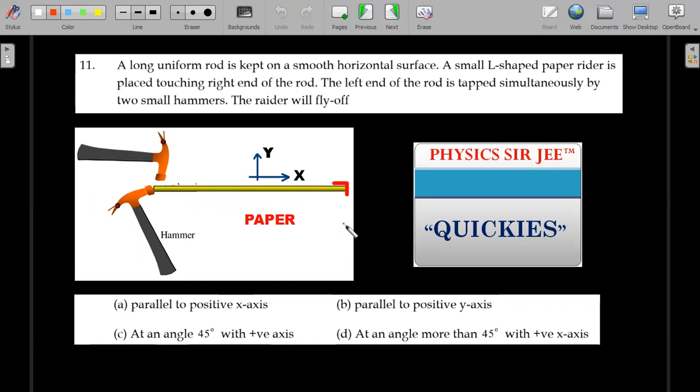A long uniform rod is kept on a smooth horizontal surface. A small L-shaped paper rider is placed touching right end of the rod. The left end of the rod is tapped simultaneously by two small hammers. One is making it vibrate in a transverse direction and another one is for the longitudinal vibrations. This rider over a period of time will fly off in which direction? Is it positive x direction? Is it positive y? Or is at an angle of 45 degrees to that or at an angle more than 45 degrees to that? That's what you are supposed to investigate here.